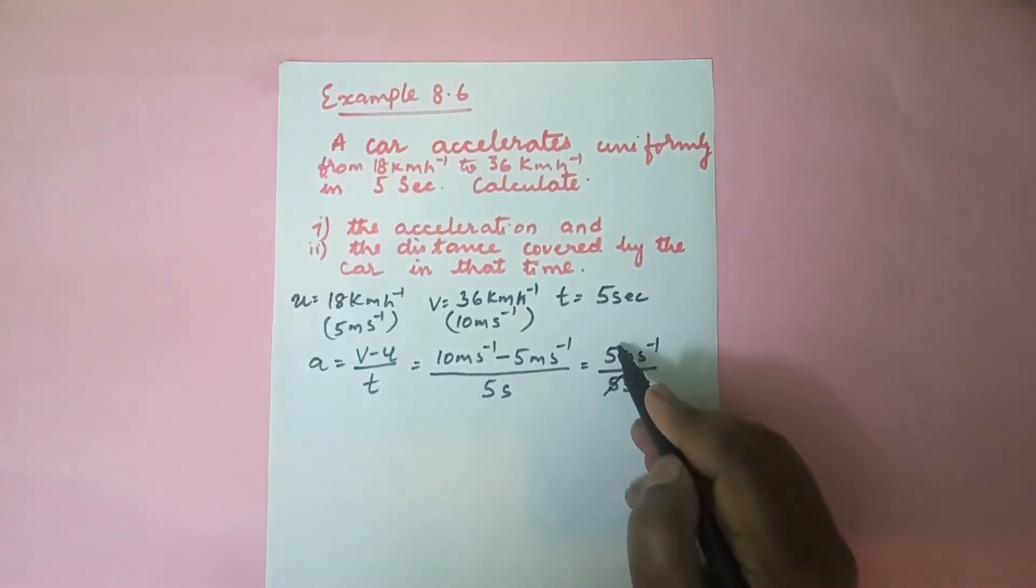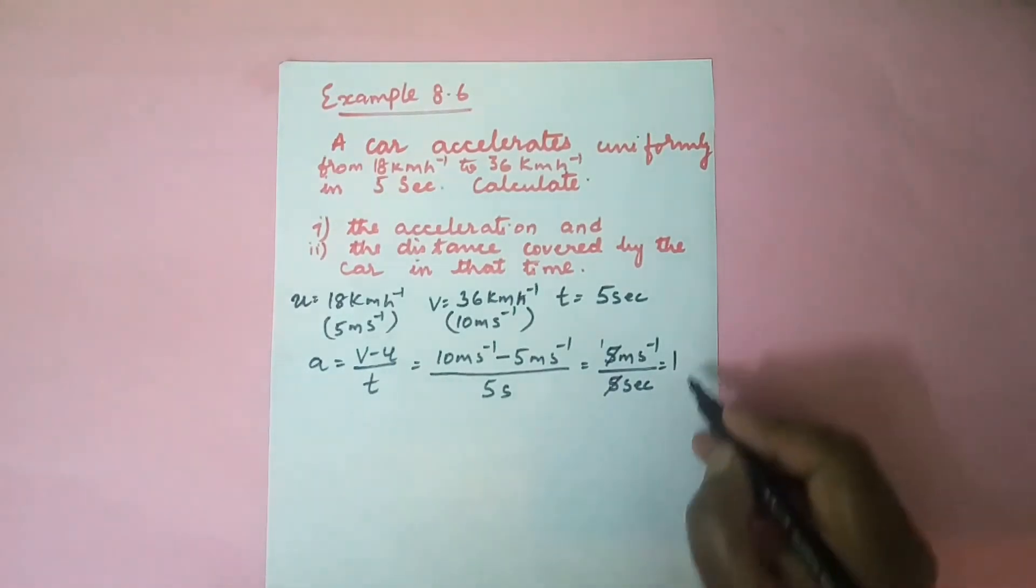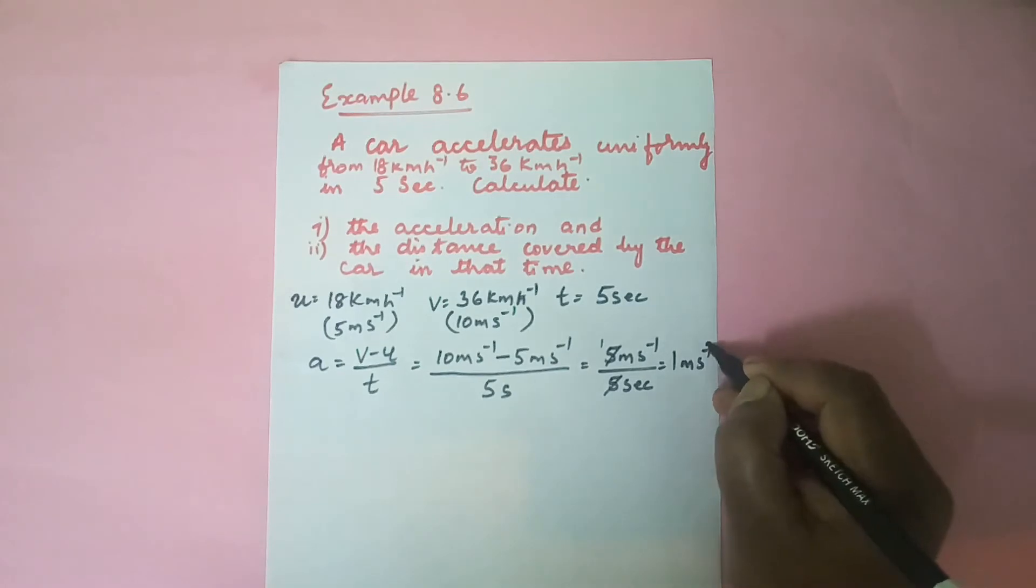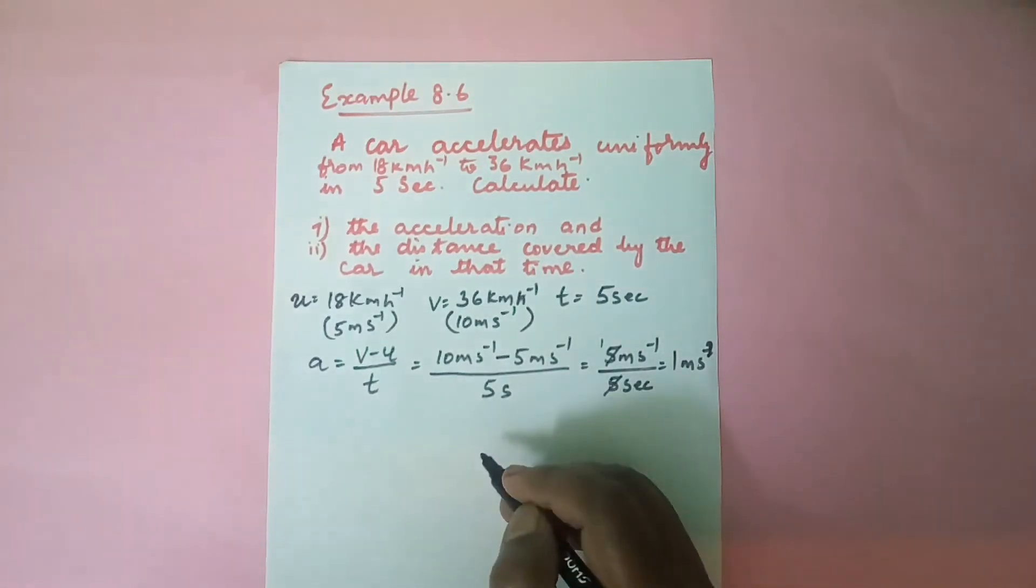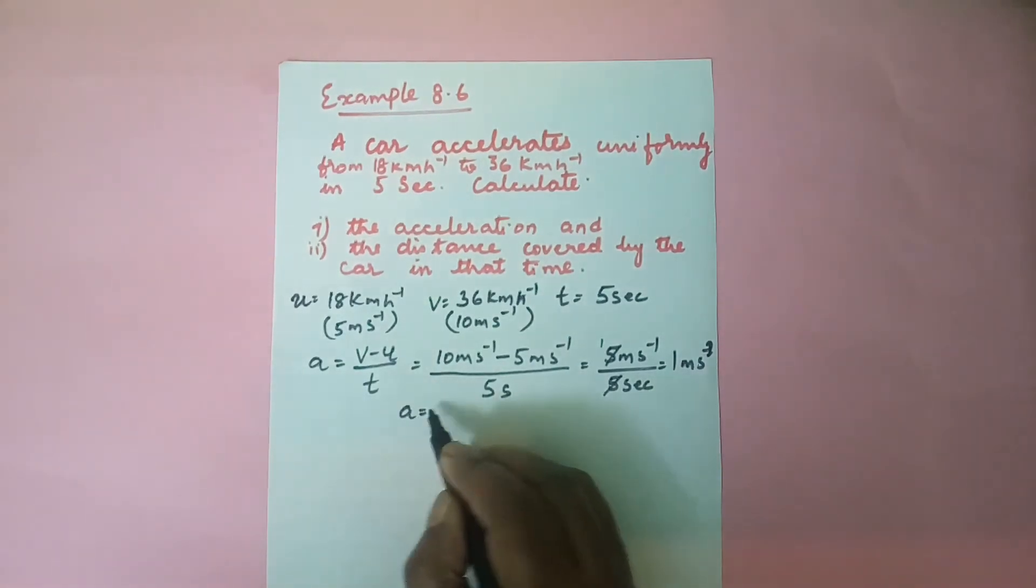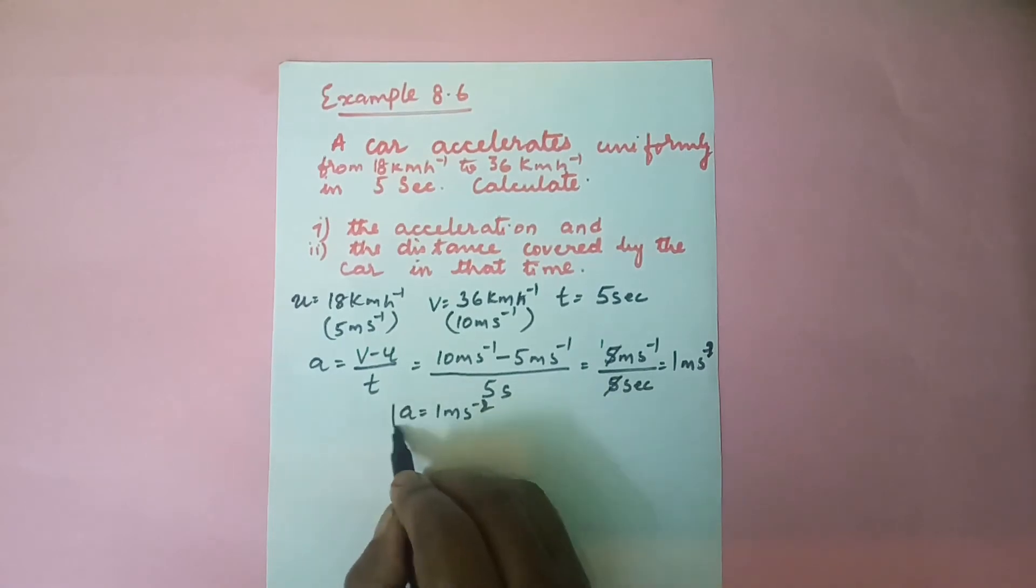So when we subtract 10 and 5 we get 5 m/s divided by 5 seconds. So 5 and 5 gets cancelled, we get 1. That means 1 m/s² children, because seconds squared we have. So a = 1 m/s².